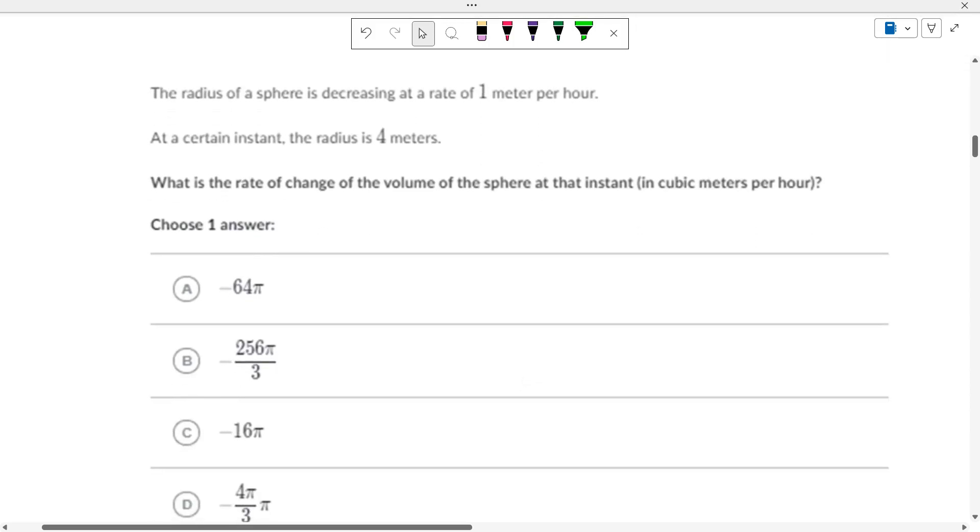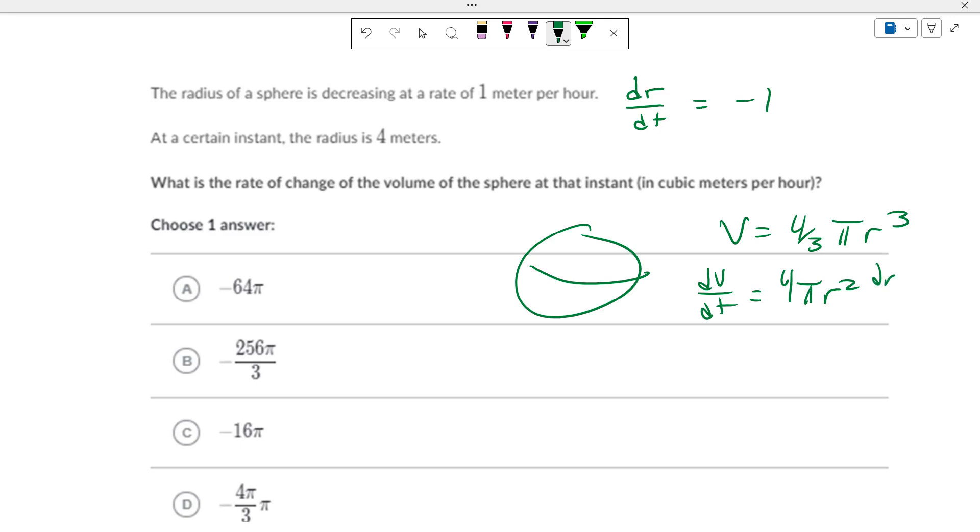The radius of a sphere is decreasing at a rate of 1 meter per hour. So dr/dt is negative 1. At a certain instant, the radius is 4. Find the rate of change of the volume of the sphere. Volume of the sphere is 4 thirds pi r cubed. Do the math. dV/dt equals 4 pi r squared dr/dt.